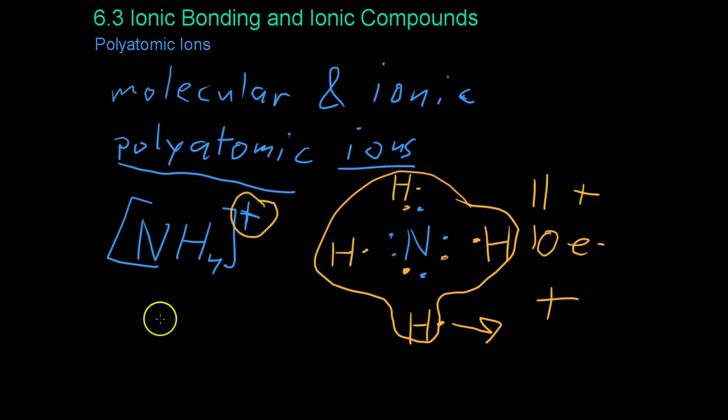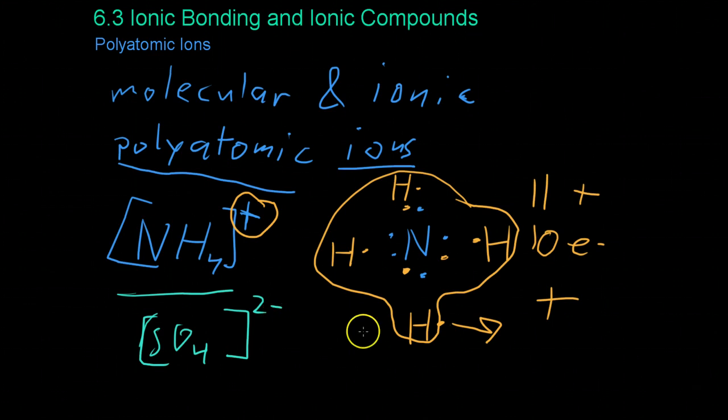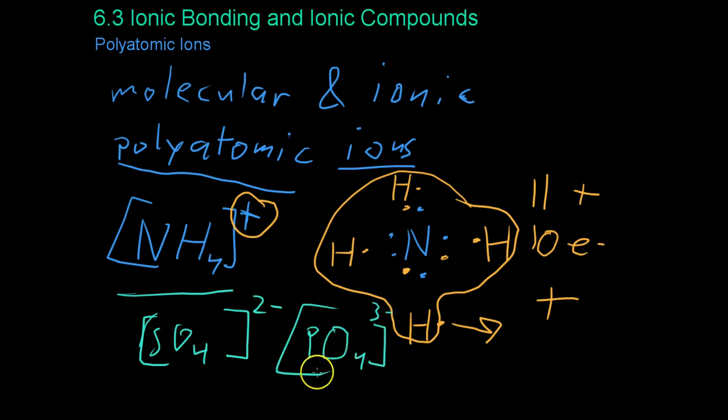And polyatomic ions come in various forms with various charges. For example, there's ammonium, and then you could also have sulfate, which is SO4 with a 2- charge on it, or phosphate, which has the formula PO4 with a 3- on it. And there's a list of polyatomic ions that you'll receive from your teacher that you'll find comes in handy when we get to studying acids and bases and various other chemicals later on.